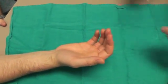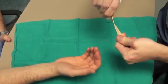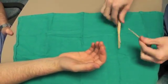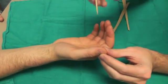Sharp, dull discrimination can also be performed by using a popsicle stick or tongue depressor broken in half, and asking the patient if they can feel anything sharp.